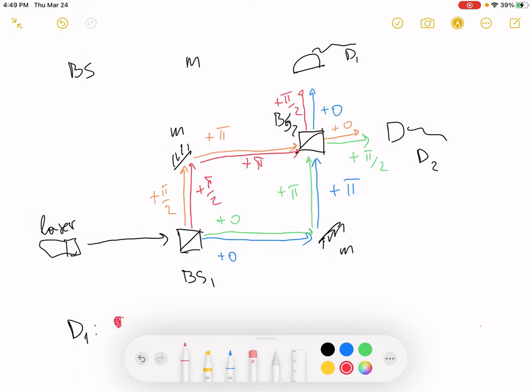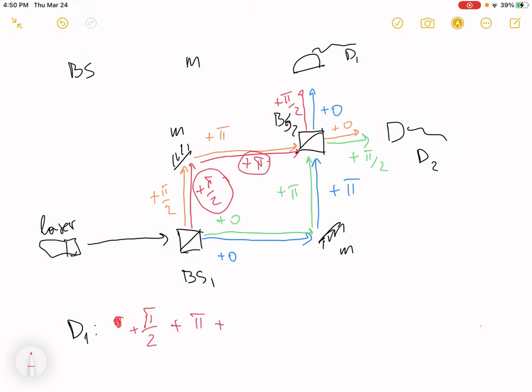Red and orange. Let's start with the red. It's the last one we've drawn. We just write how much phase it has picked up before it enters the detector. π/2 plus π this one plus π/2 this one.